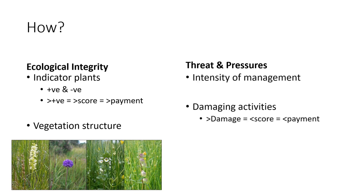Under threats and pressures, we consider the threats to biodiversity on a site — for example, is there a lot of bracken or invasive species on the site? We also consider the damaging activities that might be present, for example evidence of uncontrolled burning. Damaging activities will often lead to a lower score, which will lead to reduced payments.